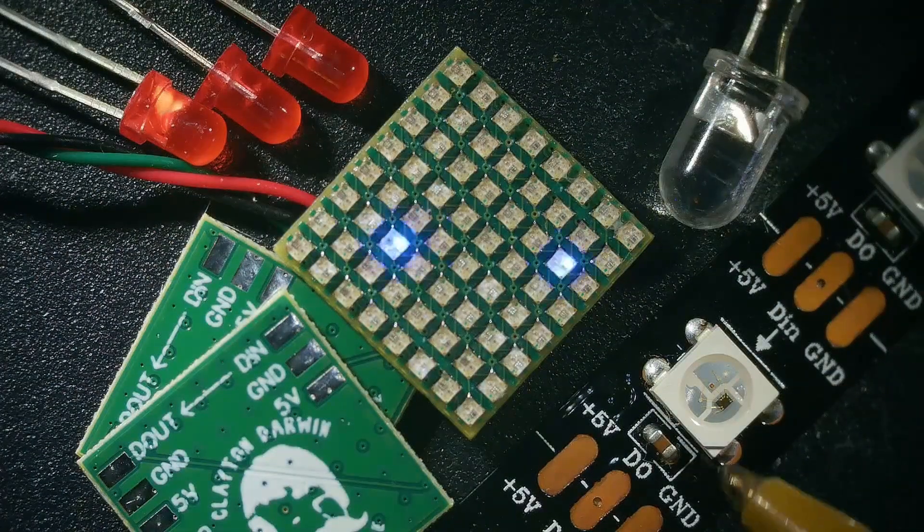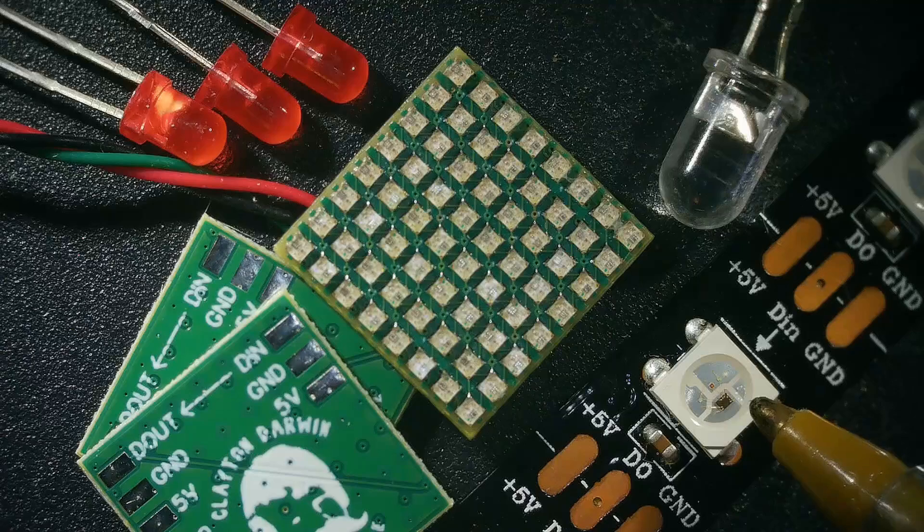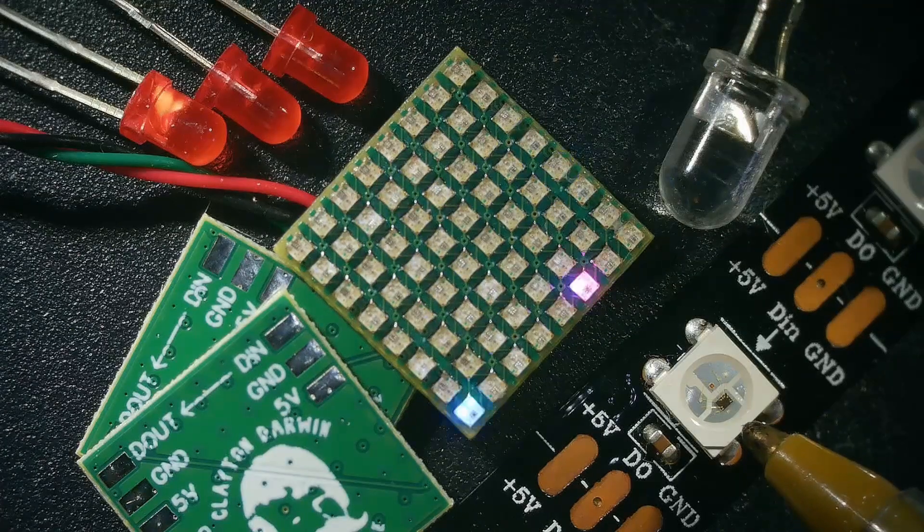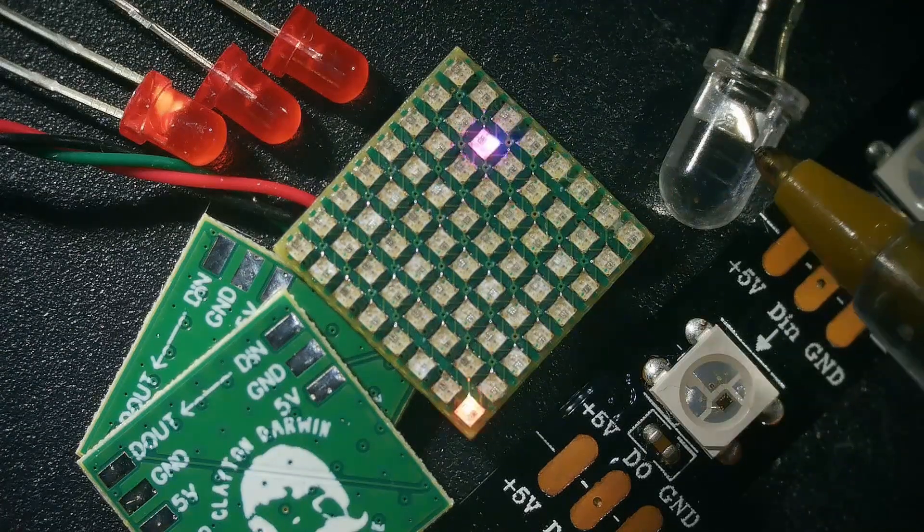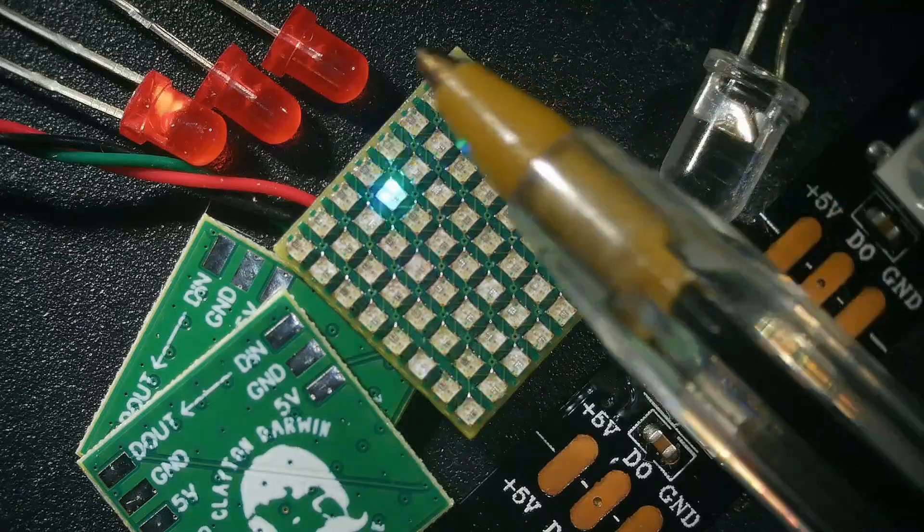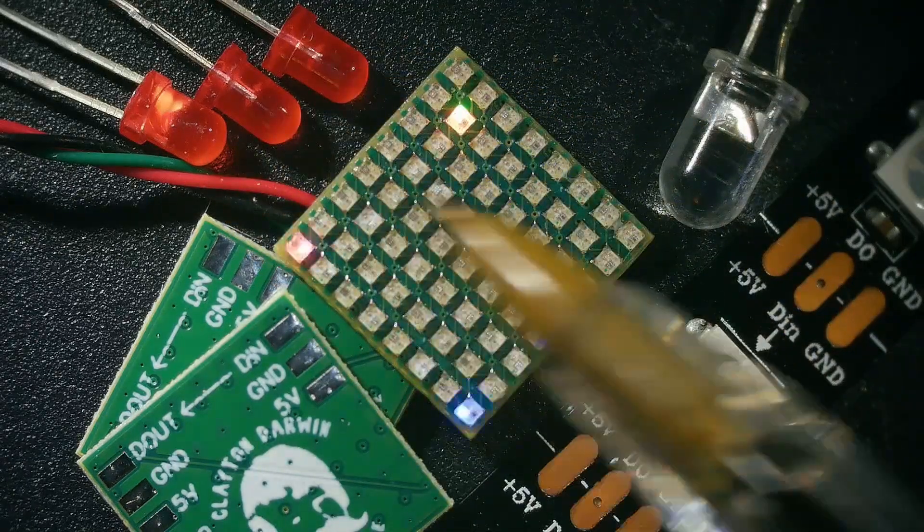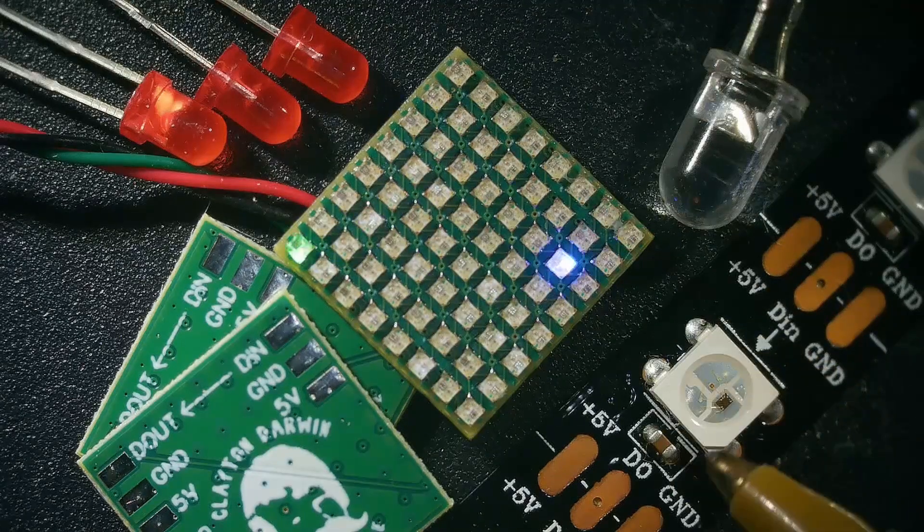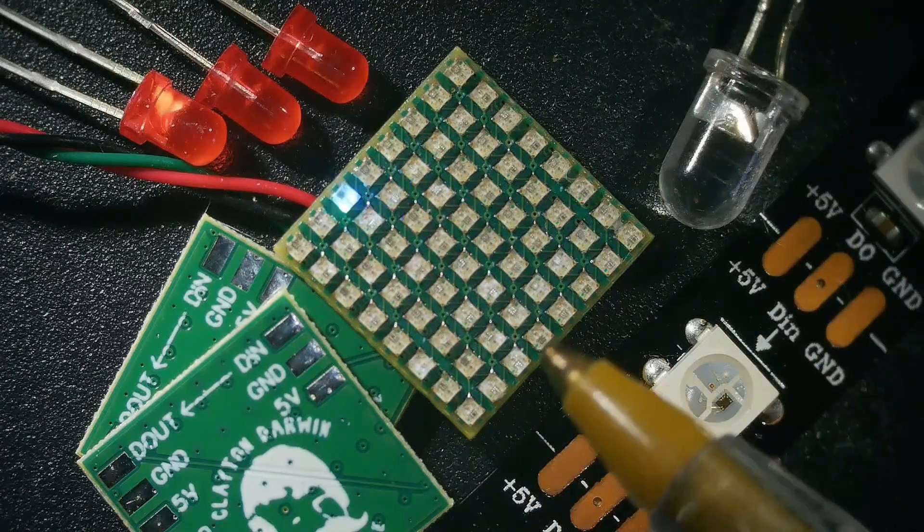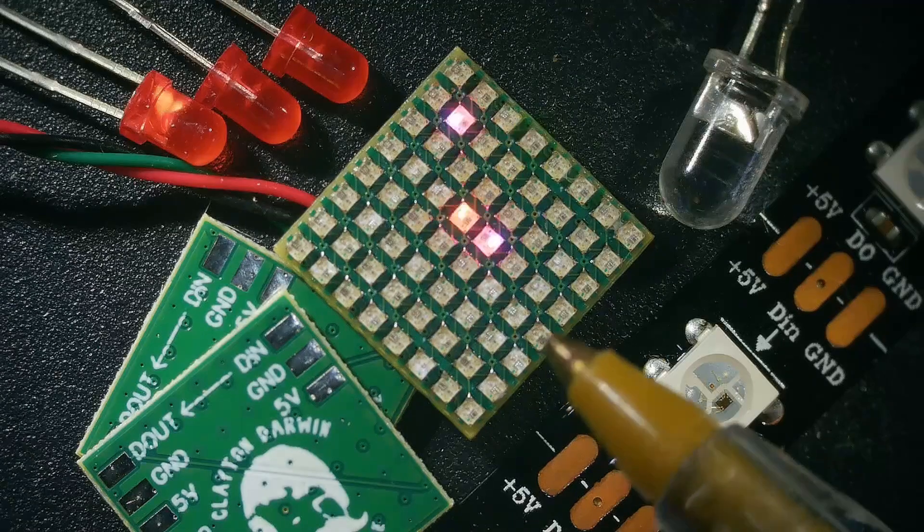This is your traditional WS2812B. This is an old TO-5 size LED. These are TO-3 size, so these are 3 millimeter diameter. That's a 5, this is 5 square, and then these are the 1010 size which is 1 by 1.